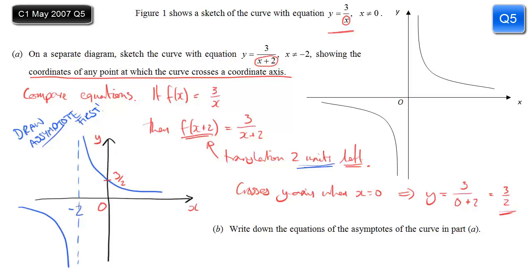Now for part b, write down the equations of the asymptotes. Well we know we've got the horizontal one that we had before, it's the x-axis or y = 0. That's no different from the original graph. The one that is different, rather than the y-axis, we have x = minus 2. Those are our two asymptotes, and the question is done.